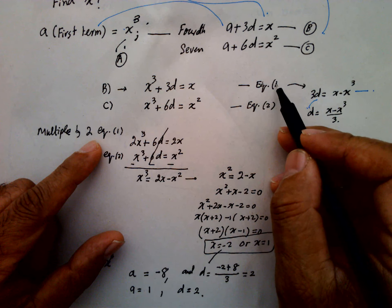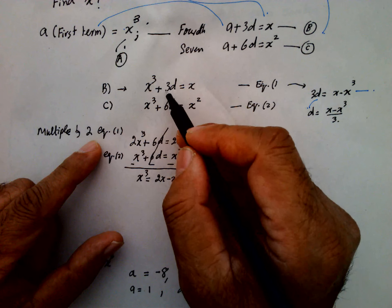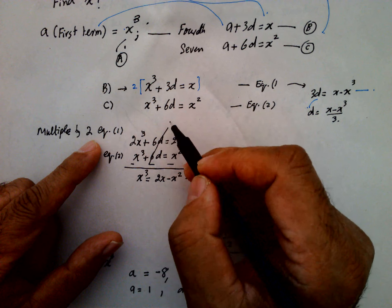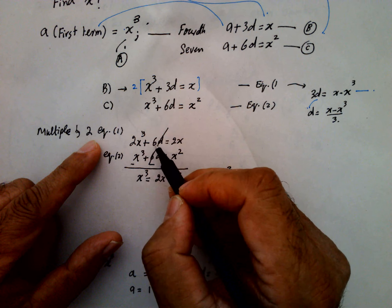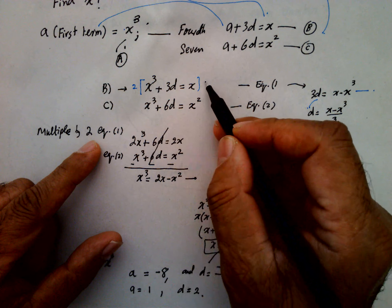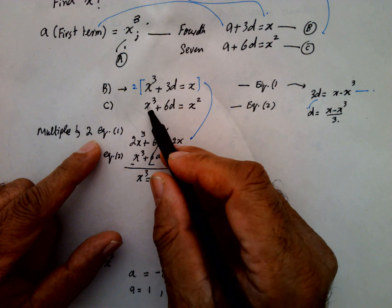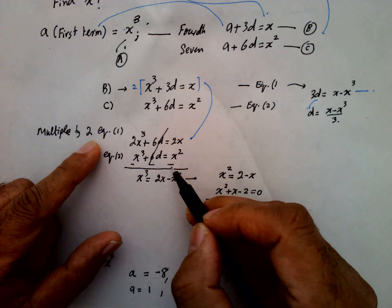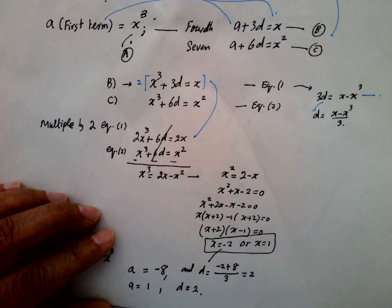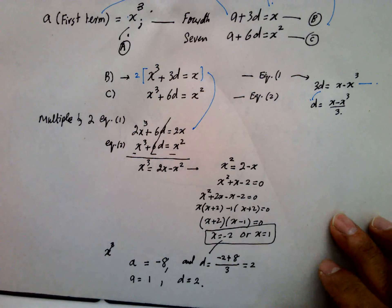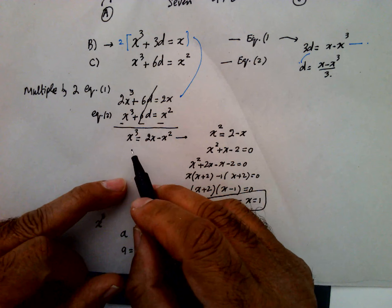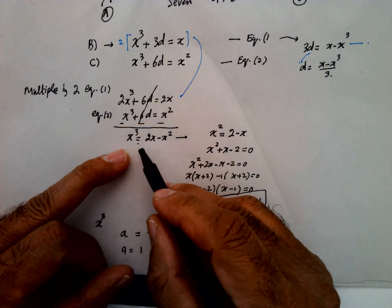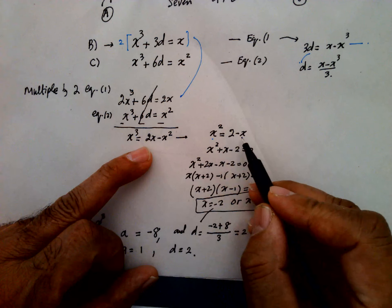In order to cancel D, multiply equation 1 by 2: 2X cubed plus 6D equals 2X. Then subtract equation 2: X cubed plus 6D equals X squared. After subtracting, the 6D terms cancel and we have an expression purely in X. Taking X as a common factor and cancelling, we get X squared equals 2 minus X, which is a quadratic.